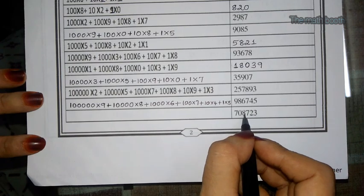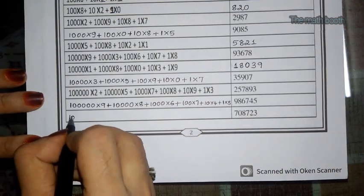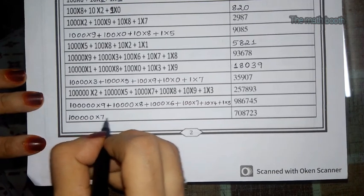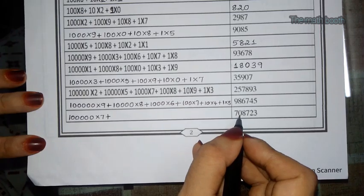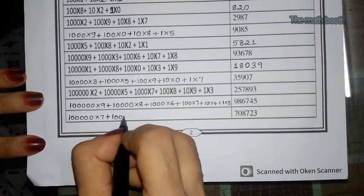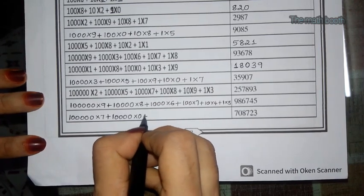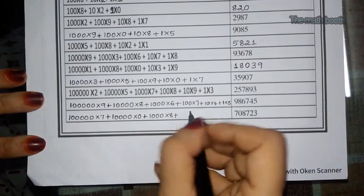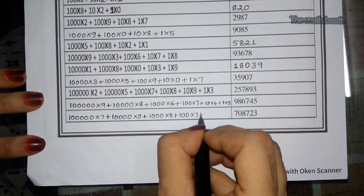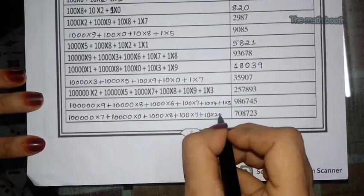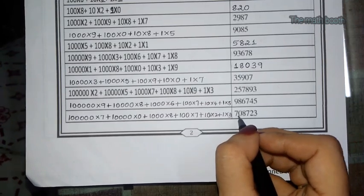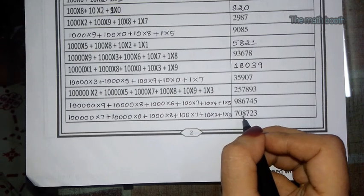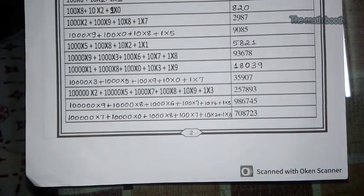The last one: the lakh place is 7, so 1 lakh into 7; the 10,000 place is 0, so 10,000 into 0; 1000 into 8; 100 into 7; 10 into 2; 1 into 3. So the answer is 7 lakhs, 08,723 — that is 7,08,723 — because the 10,000 place is 0. So we have solved Learning Sheet number 1.